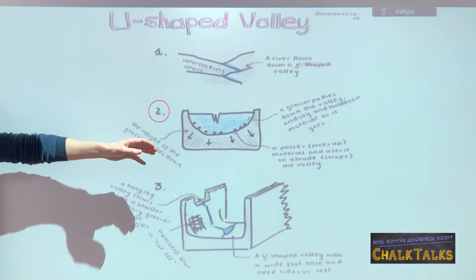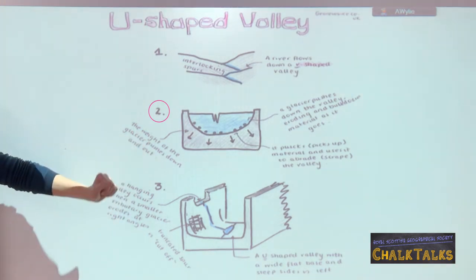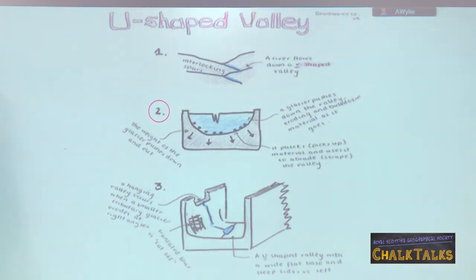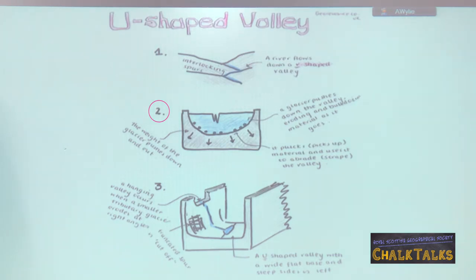The student has indicated that the weight of the glacier is pushing down and eroding the valley. We can also see that the two processes of plucking and abrasion are wearing away this valley, making it deeper and wider. What you might choose to do is explain what plucking and abrasion are, and you'd be given additional credit for explaining how these two processes work.